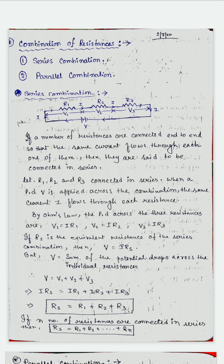Now we choose another resistance which is equivalent to R1, R2, and R3. In place of these three resistances, we connect only one resistance that is equivalent to R1, R2 and R3. So if we apply Ohm's law across that equivalent resistance, we get V = I×RS. RS is the equivalent resistance of R1, R2 and R3 — because we are studying series combination, we denote it by RS or R equivalent.